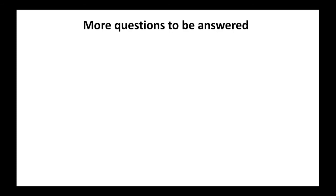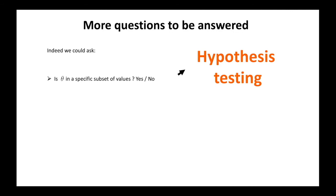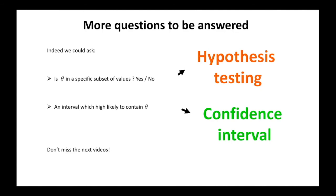There are other important questions related to the parameter that we need to answer. Instead of knowing the exact value of the parameter, we could just be interested to know if it belongs or not to a specific subset of the parameter space — this is the so-called hypothesis testing. Or, instead of knowing the exact value of the parameter, it would be more interesting to find an interval which is likely to contain the parameter — this is the so-called confidence interval. So don't miss the next videos where we are going to explore these topics. Thank you for spending this time with me. Don't forget to smash the like button and subscribe to the channel.